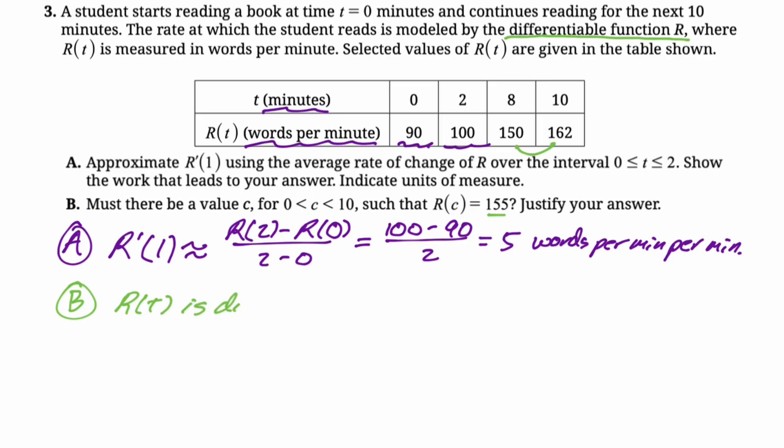So r of t is differentiable. Therefore, r of t is continuous. So now we're able to use the intermediate value theorem. And so what I like to do is I like to state the values. I know they're in the table, but I'm going to say r of 8 is 150.